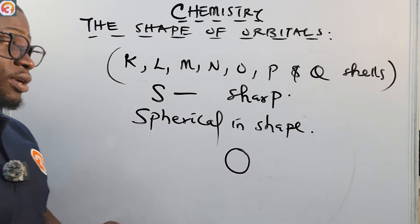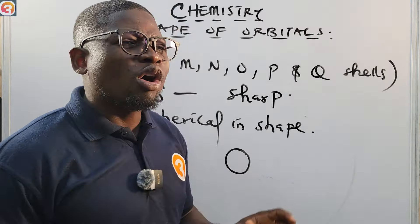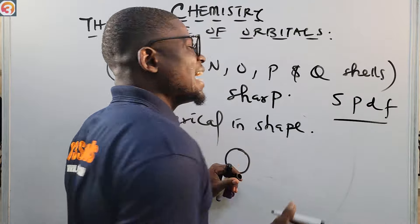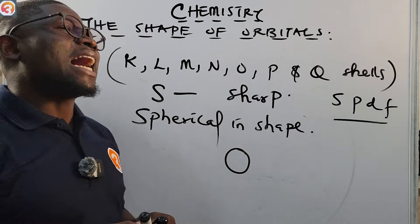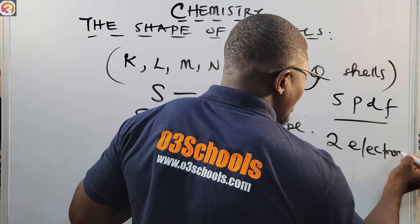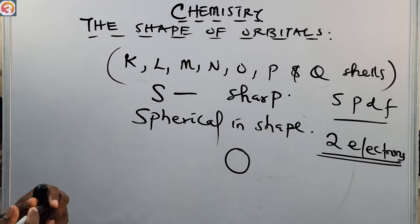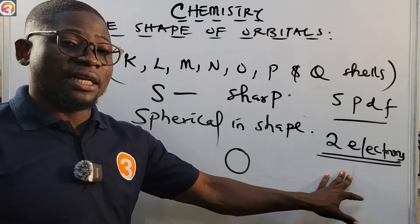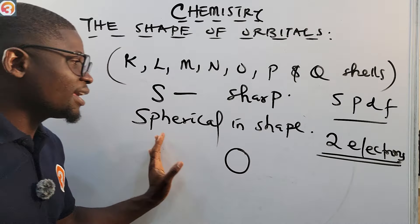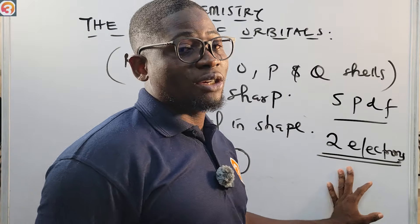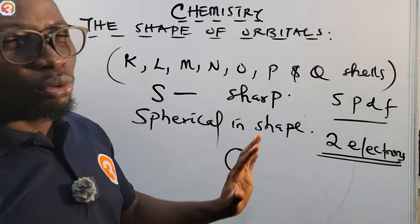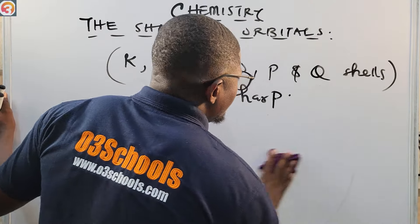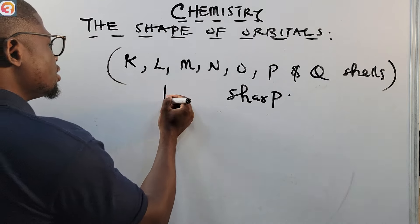Among all four orbitals — S, P, D, and F — the S orbital has the least number of electrons. The S orbital can only accommodate two electrons. To recap: the S orbital is spherical in shape and can only accommodate two electrons. That is all about the S orbital.